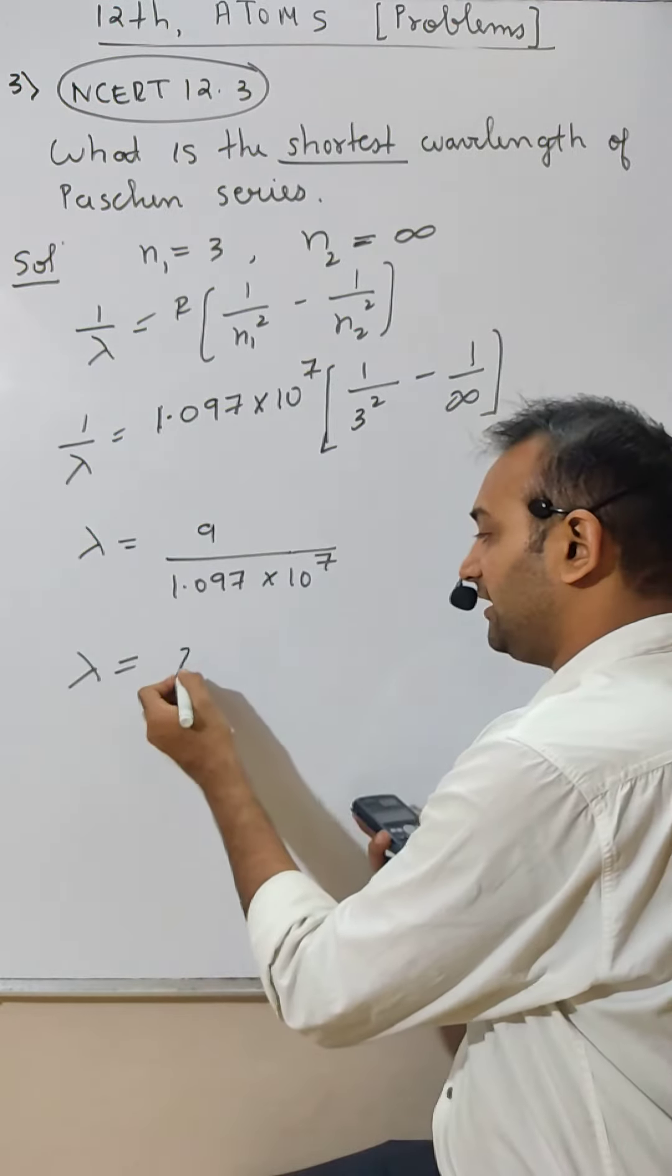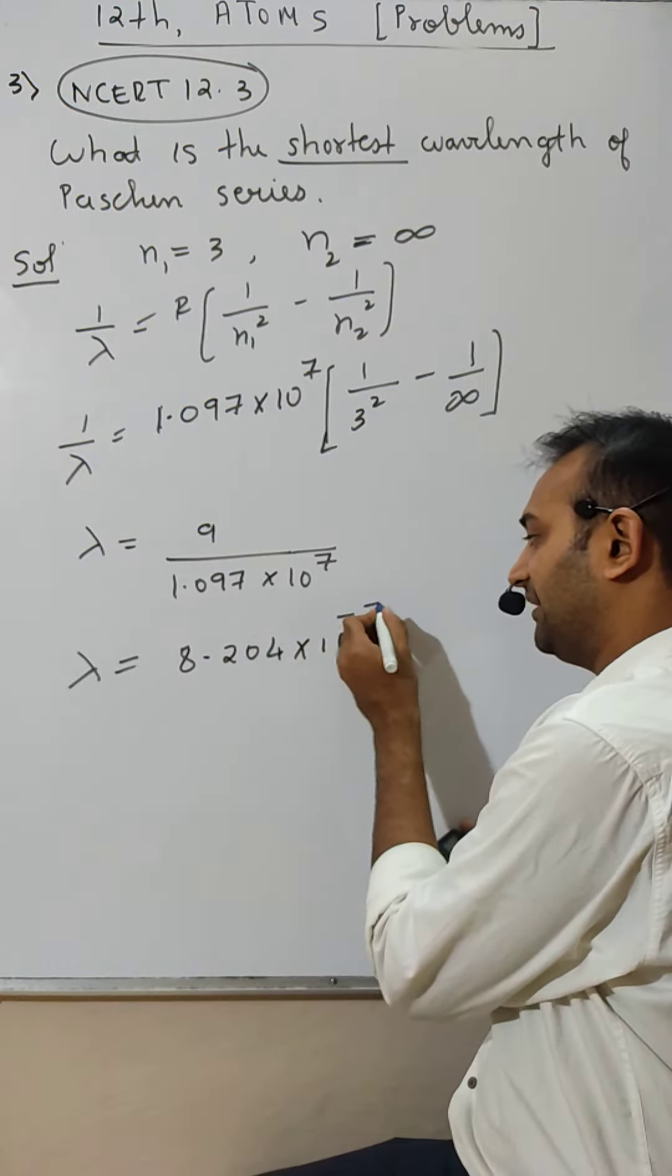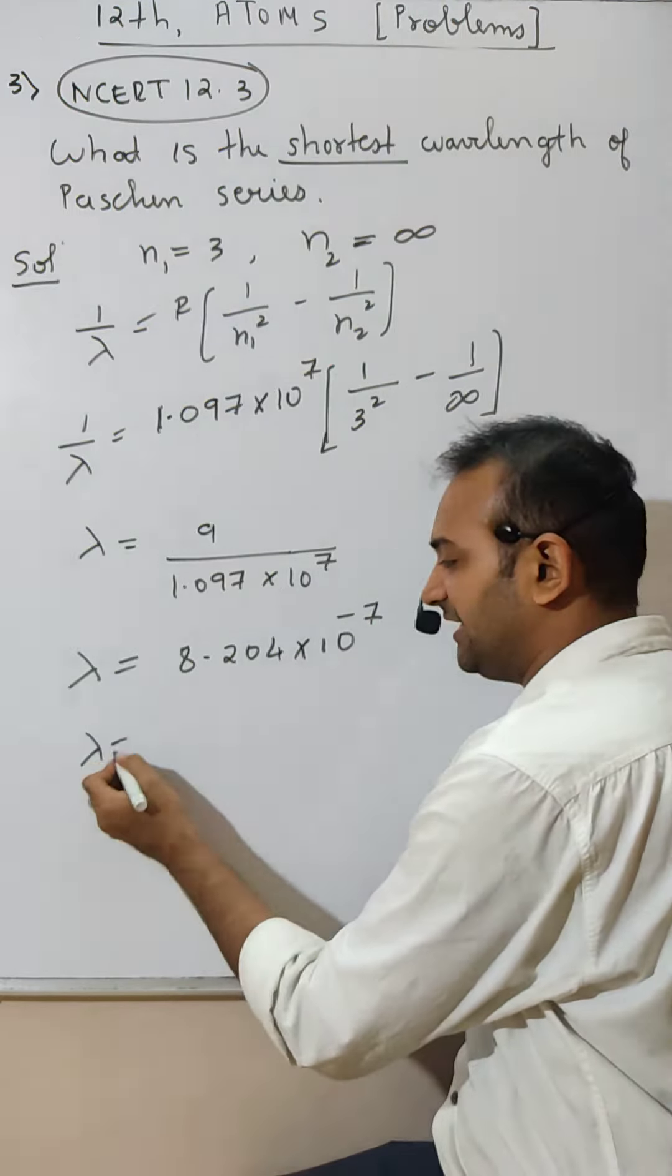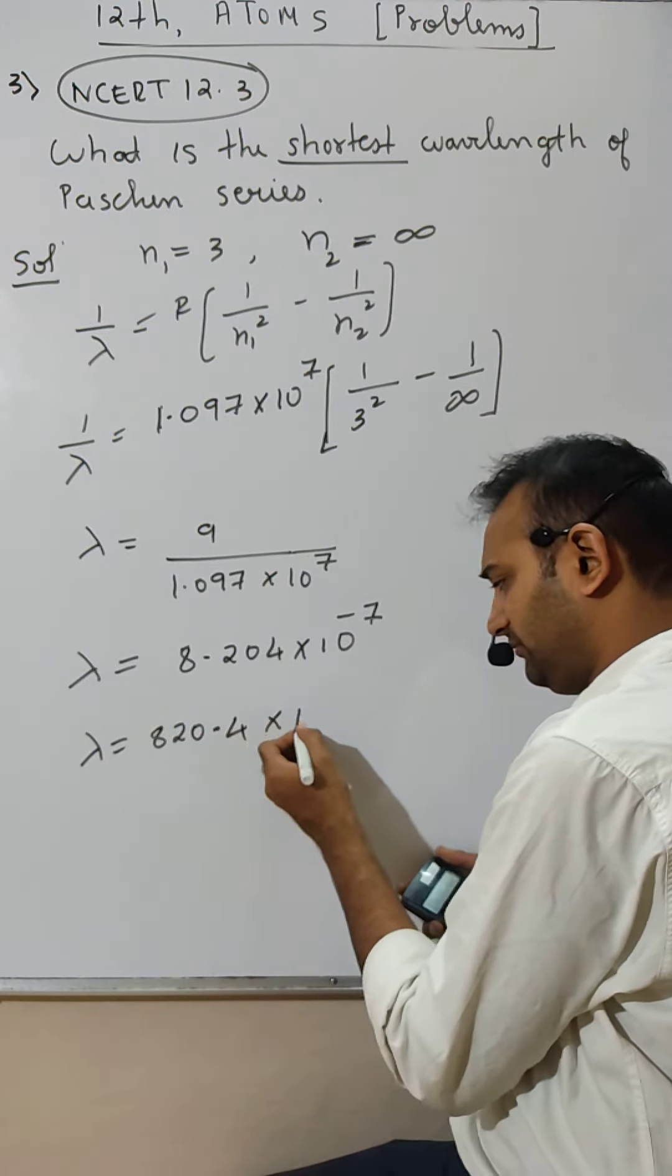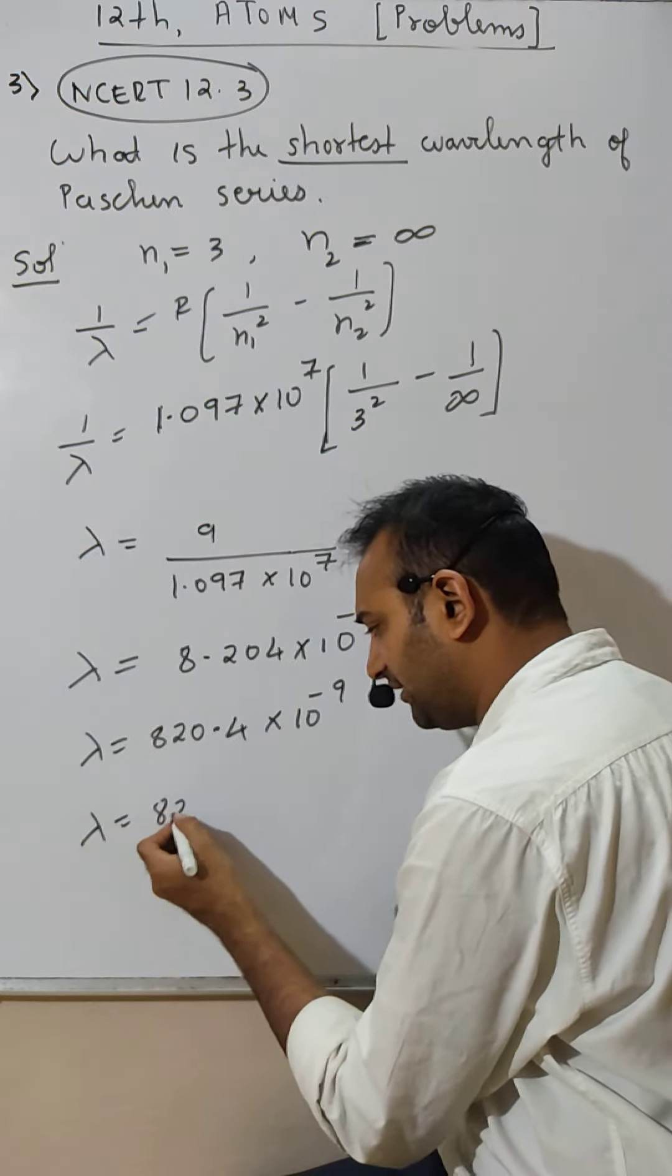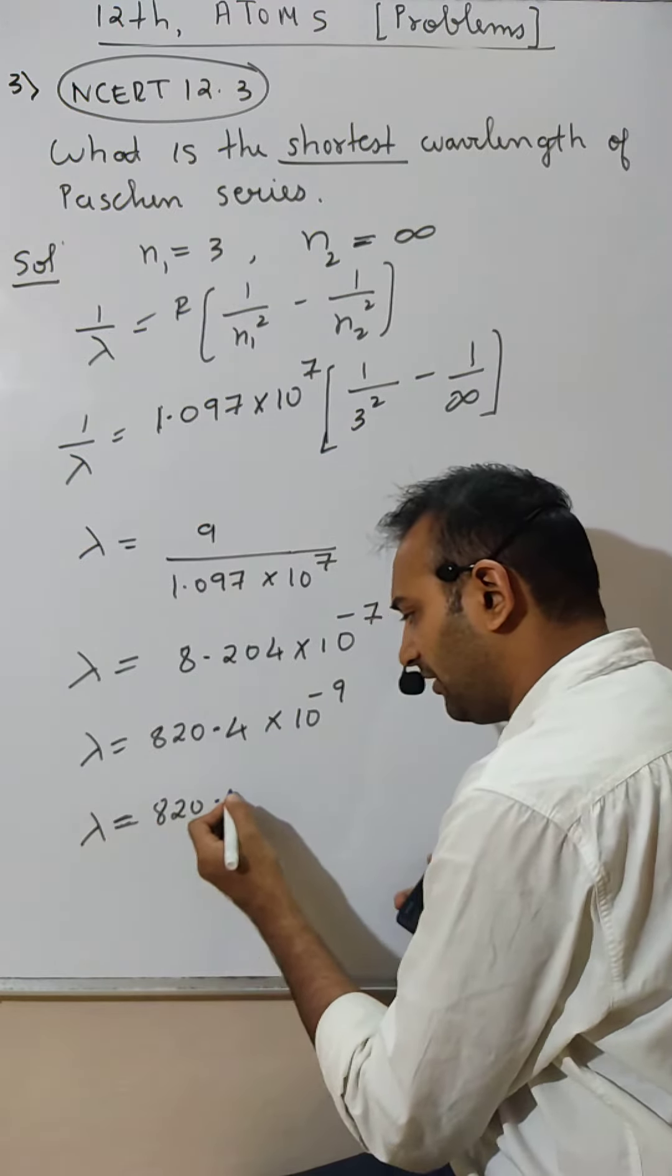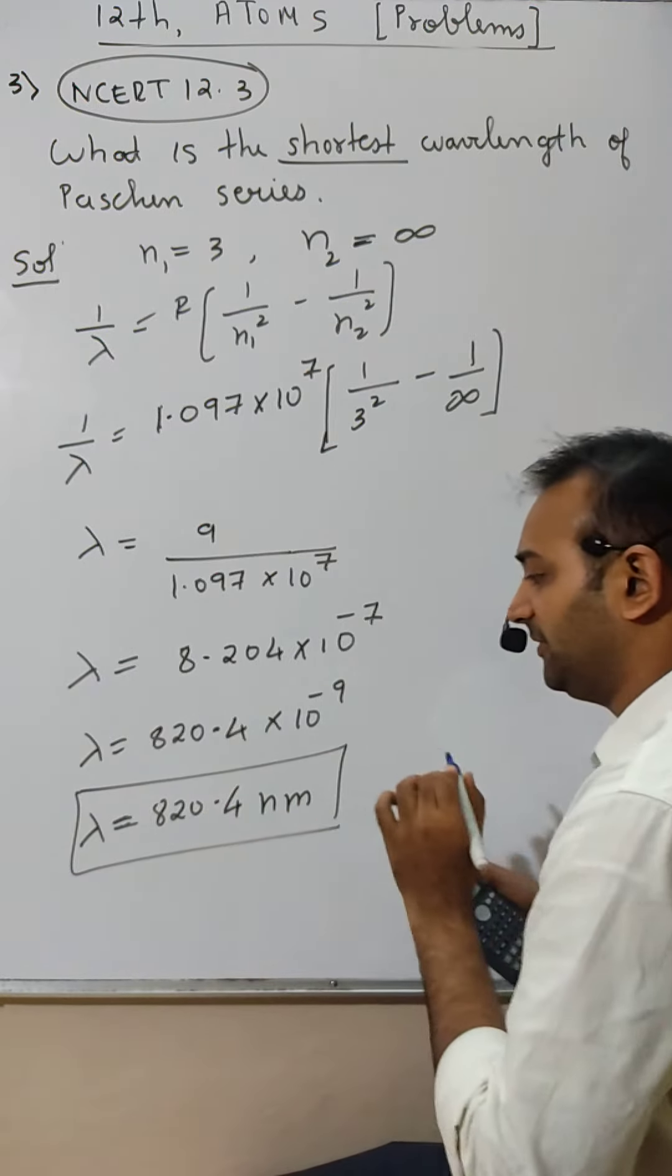I get 8.204 into 10 raised to minus 7 or I can write 820.4 into 10 raised to minus 9. That means 820.4 nanometer.